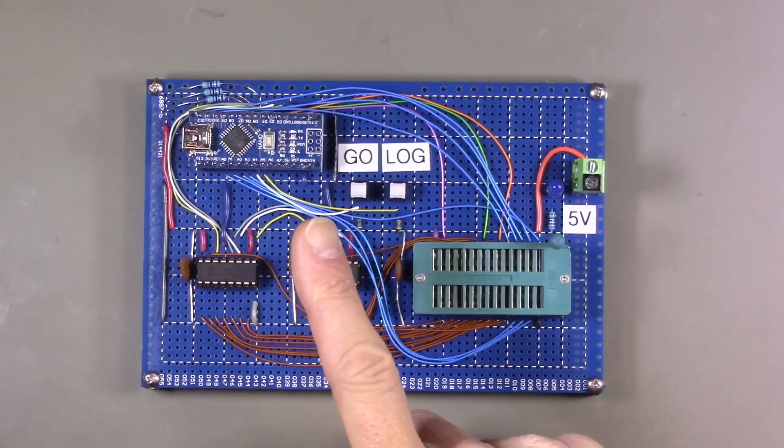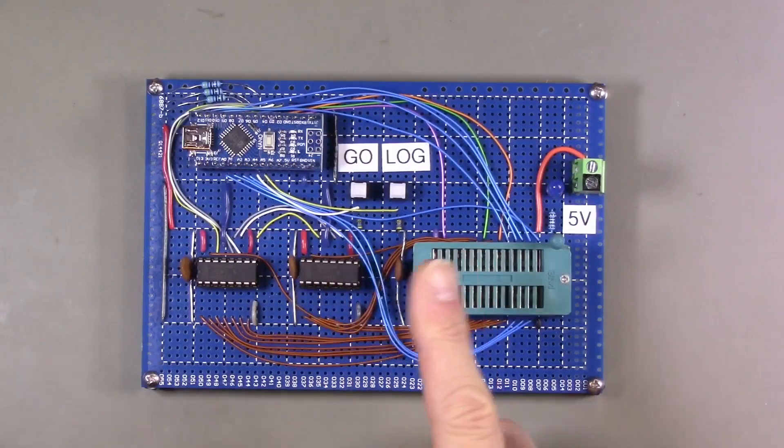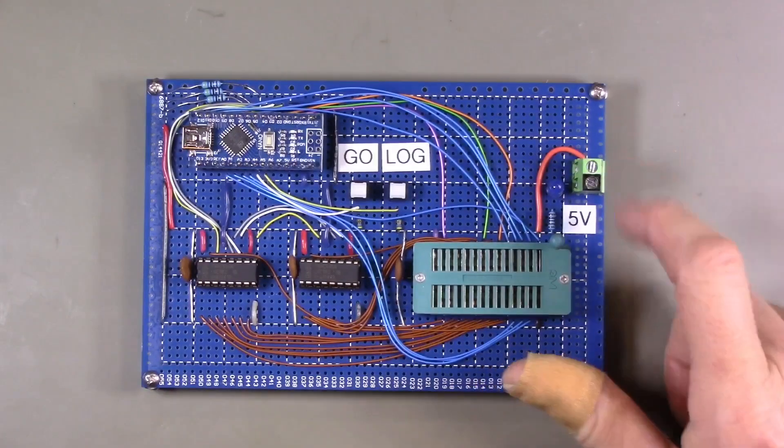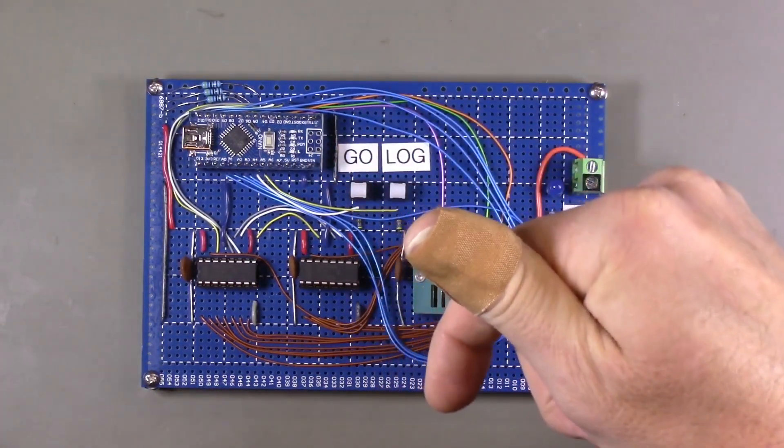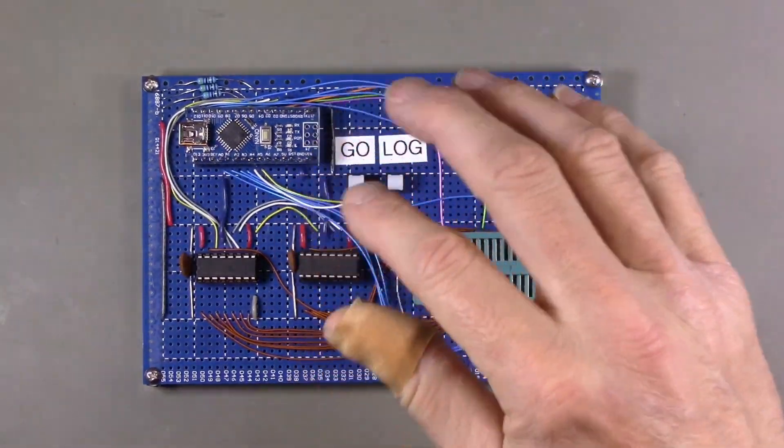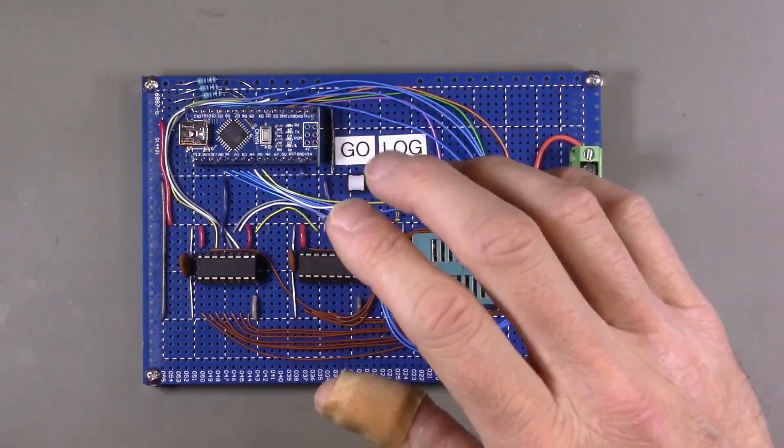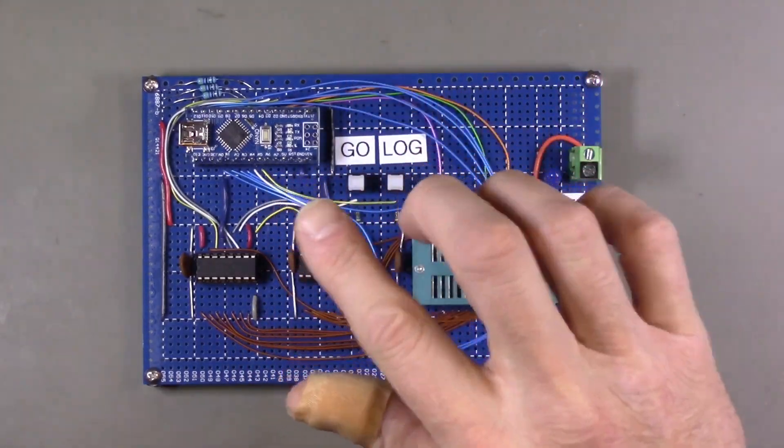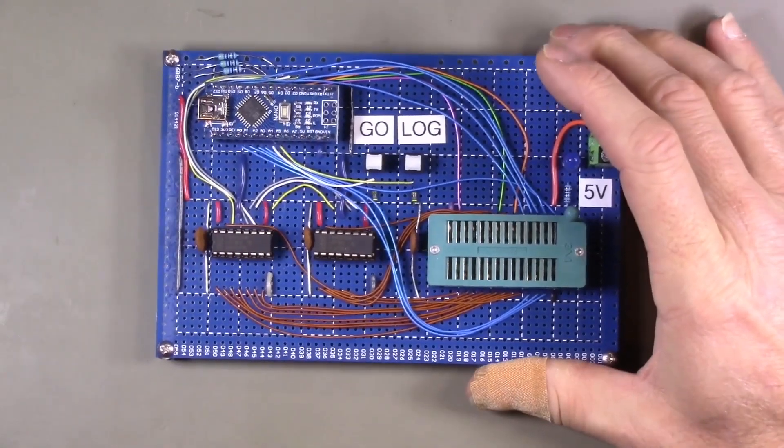There's external 5 volt power that powers everything except for the Arduino, which is powered from USB. Originally I had the USB's 5 volts power everything, and that actually got me into significant problems because if the USB port does not produce a good 5 volt rail, then you get very erratic behavior. So external power makes the whole thing more reliable.